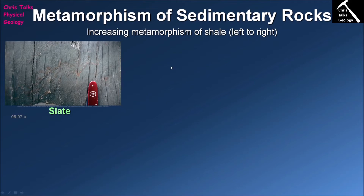Clay minerals are platy — like a piece of paper, thin but broad — so when we begin to increase temperature and pressure, the pressure will start to make these clay minerals orientate themselves. We've already discussed how when you take a rock with platy or elongate minerals and compress it, you can force those minerals to align themselves, and we can see this alignment in this sample of slate right here.